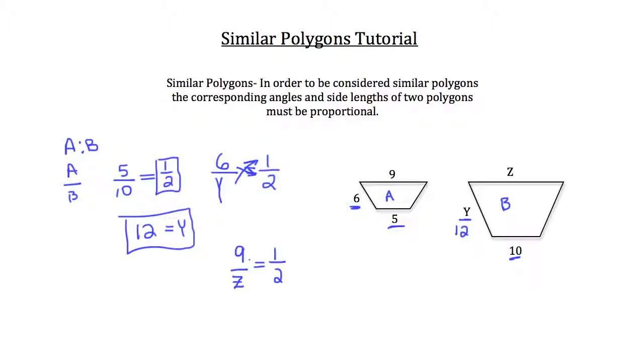So, again, use the cross product property rule to multiply across. So, 9 times 2 is 18, and Z times 1 is just Z. So, Z has a value of 18.